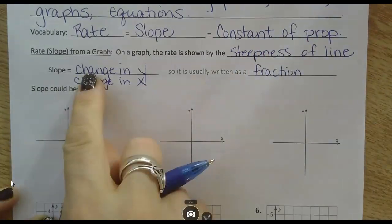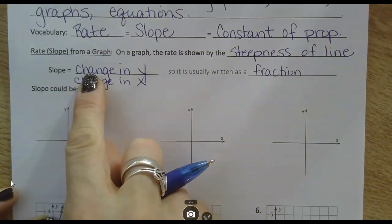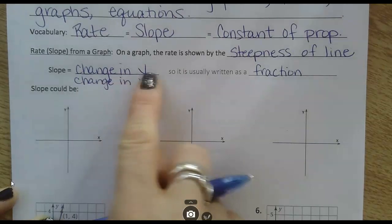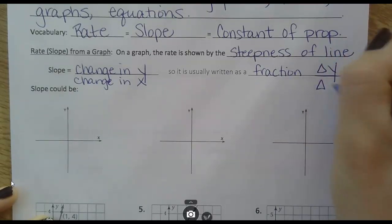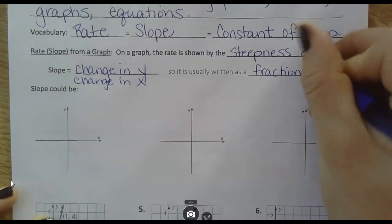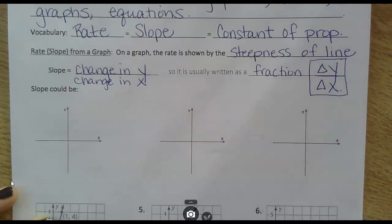We can sometimes abbreviate change with this little delta. That triangle means how much did the y change, change in y, over change in x. So this simplified fraction would be the slope of a graph.